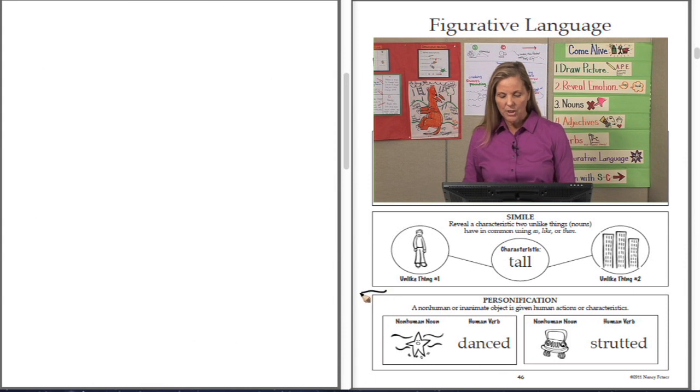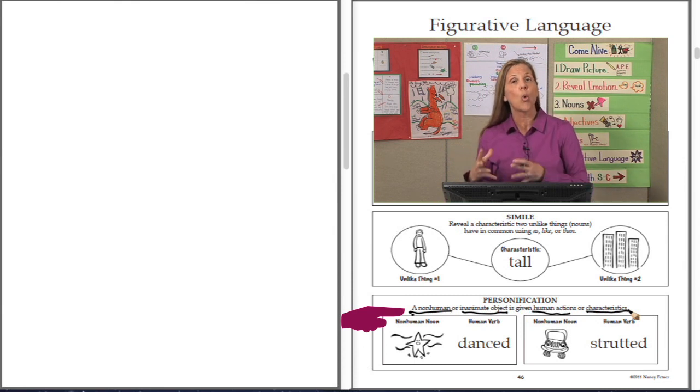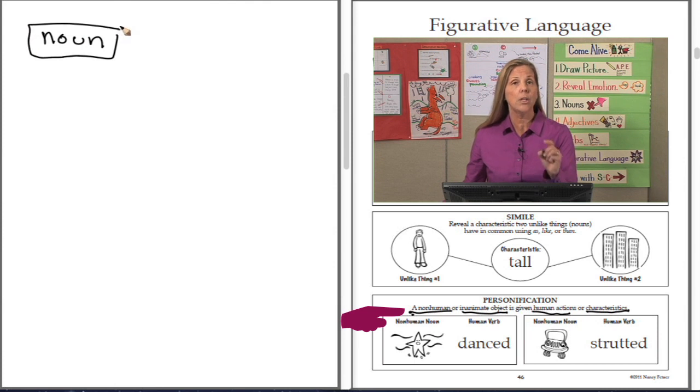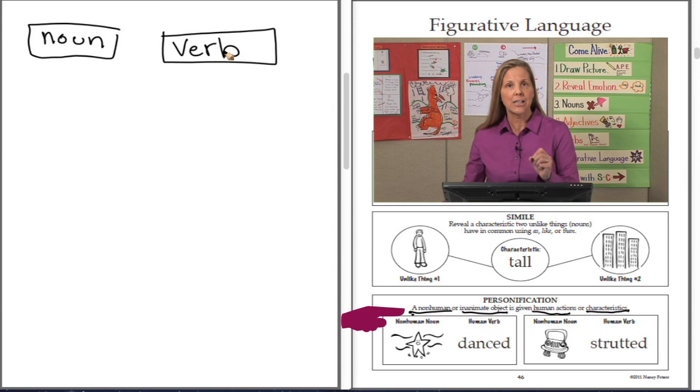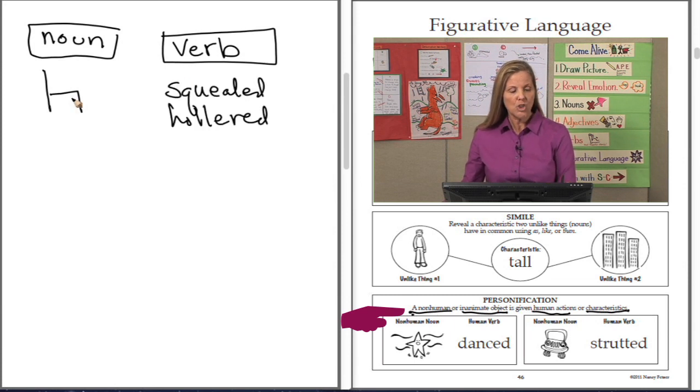The last figurative language on this page is personification. Personification is when a non-human or inanimate object is given human actions or characteristics. Let me show you my secret formula so that students can actually embed this in their writing. Our secret formula will be a noun, but the noun can only be non-human or non-living or an inanimate object. The verb is a human action. Let me give you an example. The noun is a chair. The verb, though, is going to have a human action.